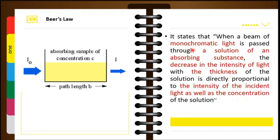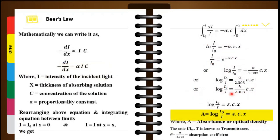Beer's law states: when a beam of monochromatic light is passed through a solution of an absorbing substance, the decrease in the intensity of light with the thickness of the solution is directly proportional to the intensity of incident radiation as well as to the concentration of the solution. Mathematically: −dI/dx = α·I·c, where I is the intensity, x is the thickness, c is the concentration, and α is the proportionality constant.